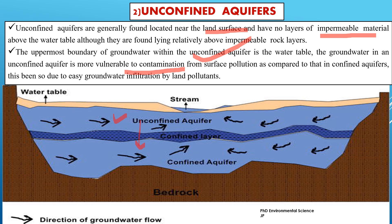Unconfined aquifers are more susceptible to contamination from surface pollutants due to their direct connection with the surface. Pollutants from agricultural runoff, industrial spills, septic systems and other surface activities can easily infiltrate the soil and reach the groundwater. Since there is no impermeable barrier to restrict the movement of water and contaminants, any pollutants on the land surface can percolate through the soil and contaminate the groundwater. Unconfined aquifers receive recharge directly from precipitation, surface water bodies and other sources, but this also means contaminants can enter the aquifer easily.